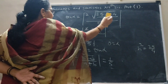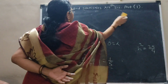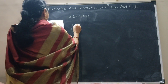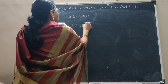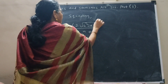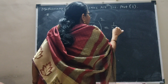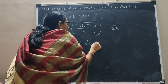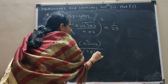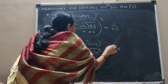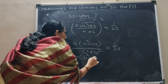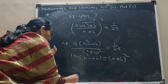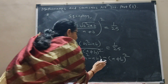Now squaring both sides: [2√(h² − ab) / (a + b)]² = 1/25. So 4(h² − ab) / (a + b)² = 1/25. Cross-multiplying gives 100(h² − ab) = (a + b)², which is the required condition.